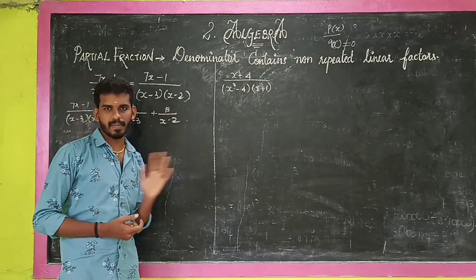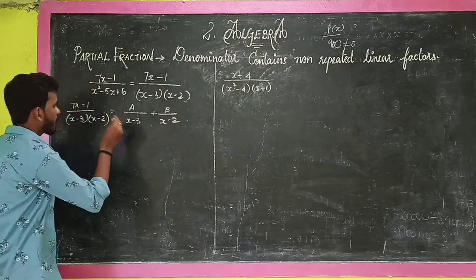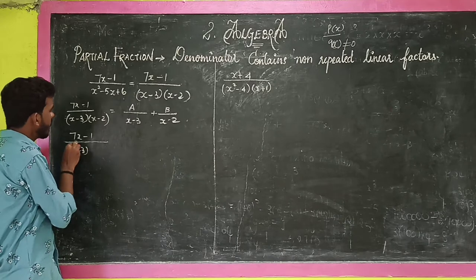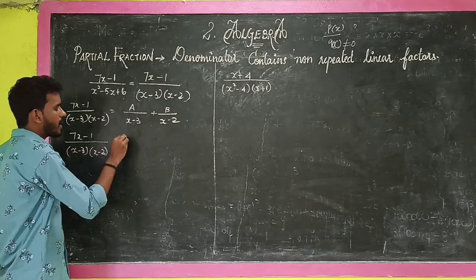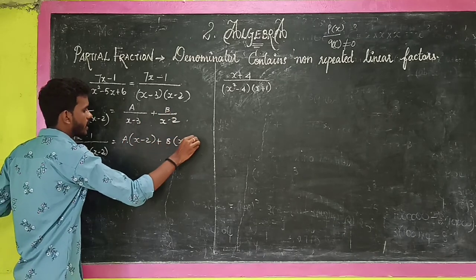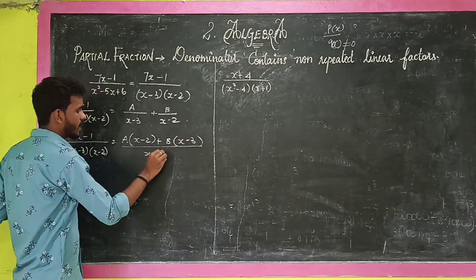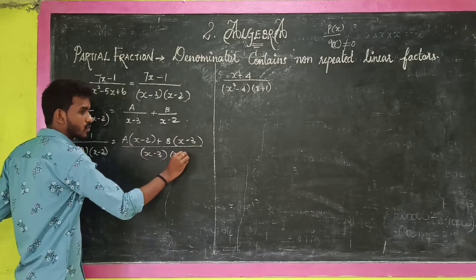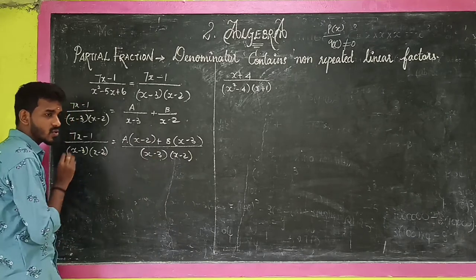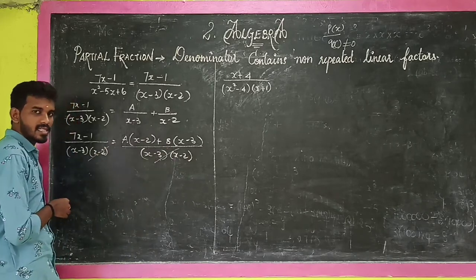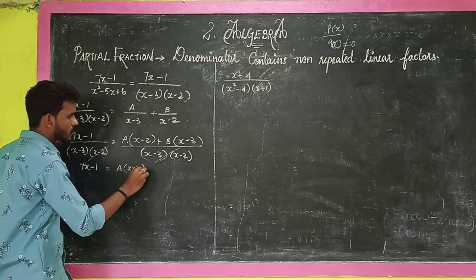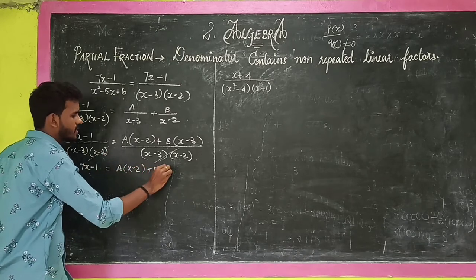Now I am going to do the cross multiplication: A into (x minus 2) plus B into (x minus 3), the whole thing divided by (x minus 3) into (x minus 2). Since the denominators are the same on both sides, we cancel them. So 7x minus 1 is equal to A into (x minus 2) plus B into (x minus 3).